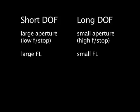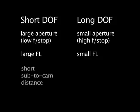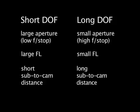When the camera is focused on a subject that is close to the camera, we get a shorter depth of field, and when the lens is focused on a subject that is far from the camera, we get a long depth of field.